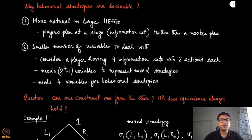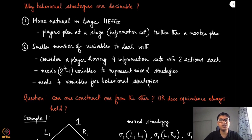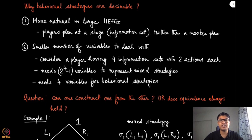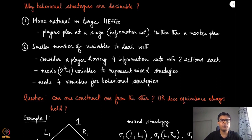We spoke about a different kind of randomized strategy in the context of IIEFGs in the previous module. That randomized strategy is called the behavioral strategy, and we have also seen what relationship it has with the mixed strategy that we are more comfortable with. Now, why is behavioral strategy desirable, particularly in the case of extensive form games? It is more natural in larger IIEFGs — players generally plan at an information set level rather than having a master plan over all possible strategies from the very beginning.